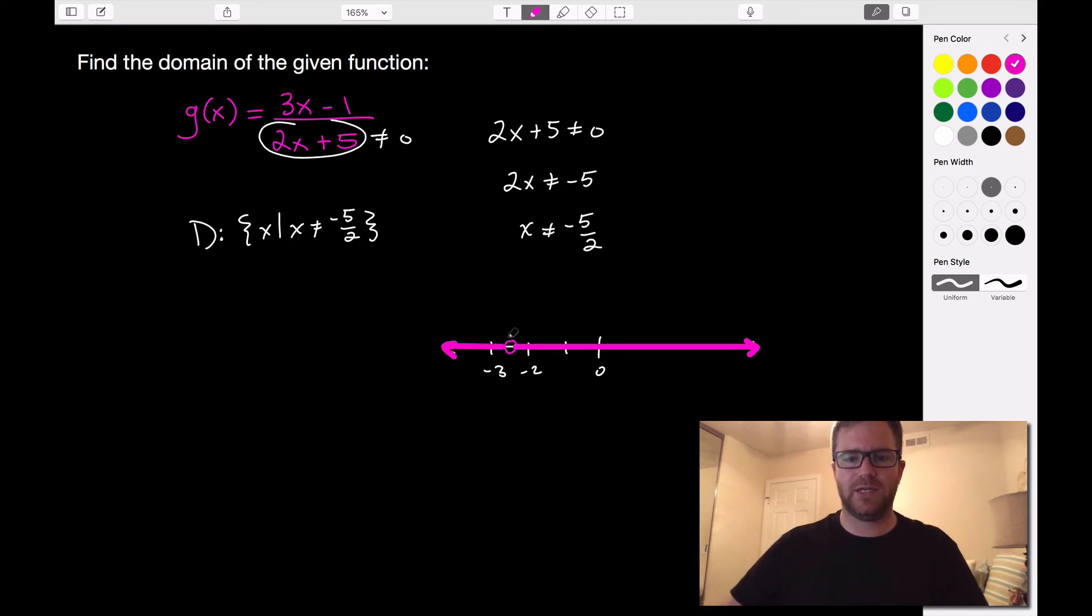So what would this be in interval notation? Well, this is going all the way off to negative infinity. This is going all the way off to positive infinity. And the only problem that we have is here at negative 5 halves. So here at negative 5 halves is the only problem that we have.